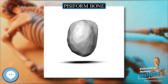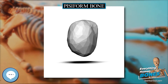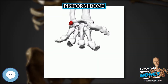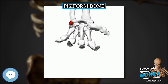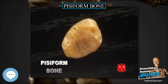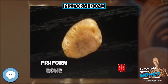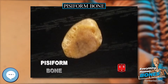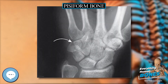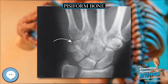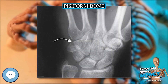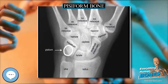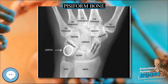The pisiform is a sesamoid bone with no covering membrane of periosteum. It is the last carpal bone to ossify. The pisiform bone is a small bone found in the proximal row of the wrist, the carpus. It is situated where the ulna joins the wrist, within the tendon of the flexor carpi ulnaris muscle.